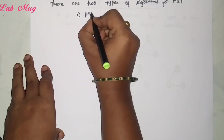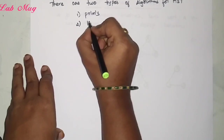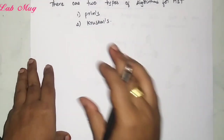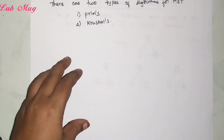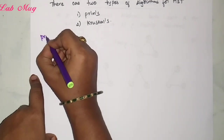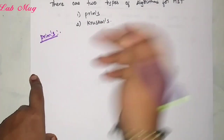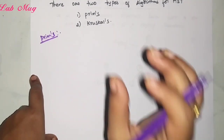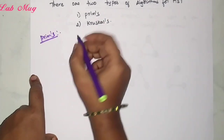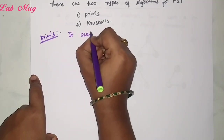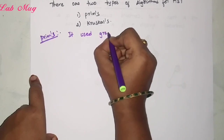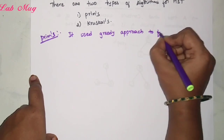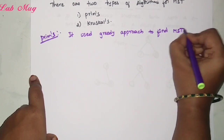The first algorithm is Prim's algorithm and the second one is Kruskal's algorithm. Both of them work similarly. First, we will do Prim's algorithm, and after that I will explain Kruskal's algorithm. Each of these two algorithms are very easy. The approach we follow here is a greedy approach — it uses a greedy approach to find the MST, that is, the Minimum Spanning Tree.